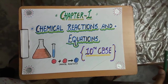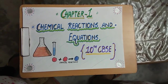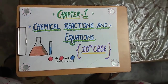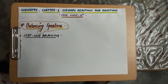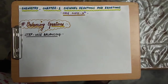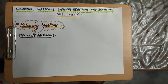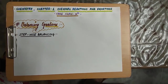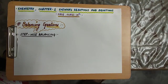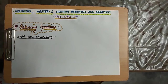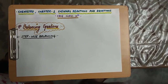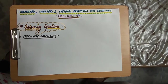Hello students, today we are going to study Chapter 1, Chemical Reactions and Equations, Part 3, Class 10th, CBSE. Moving further, now we are going to study the balancing of equations. What is meant by balancing of chemical equations? It is the method of making the number of atoms of different elements on both sides of the equation equal. There are two methods of balancing an equation: first is the stepwise balancing, and second is quick balancing.